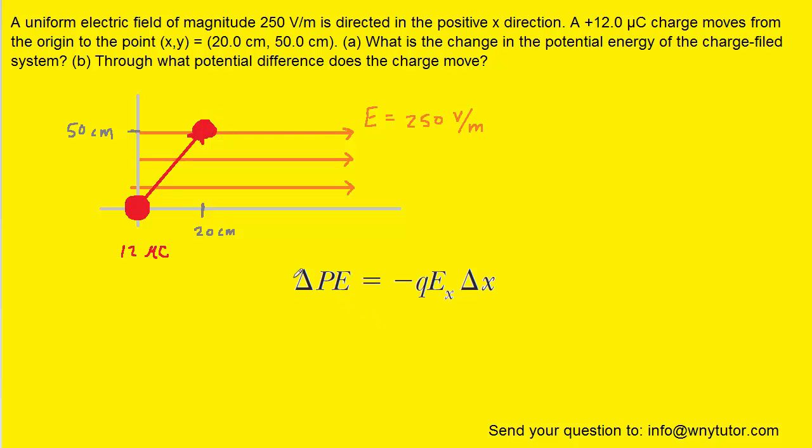Now we know that the change in electrical potential energy is equal to negative the charge multiplied by the electric field component in the x-direction multiplied by the displacement in the x-direction.